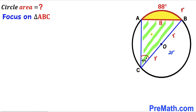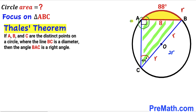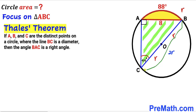Now we are going to focus on triangle ABC and recall the Thales theorem. According to this theorem, if we have three points A, B, and C on the very same circle where line BC is the diameter, then angle BAC has got to be a right angle — 90 degrees. So angle BAC is 90 degrees since points A, B, and C are distinct points on the same circle and BC is the diameter.